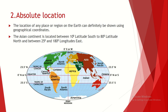Next, we move to absolute location or specific location. The location of any place or region on the earth can definitely be shown using geographical coordinates. Geographical coordinates mean longitudes and latitudes. When you were in Grade 7 and 8, you already learned about what latitudes and longitudes are.